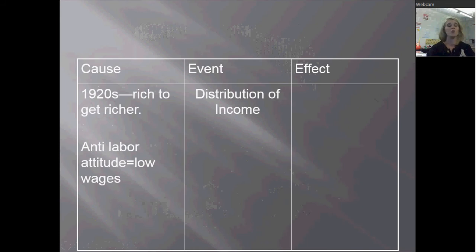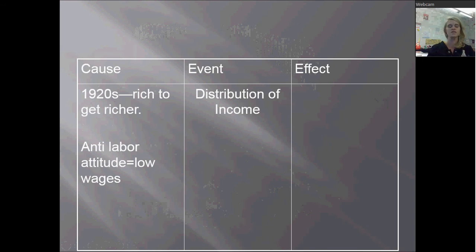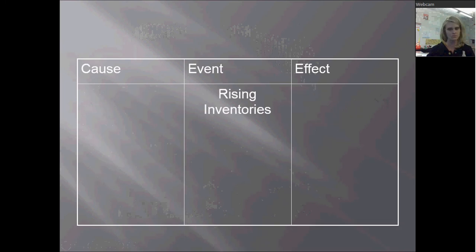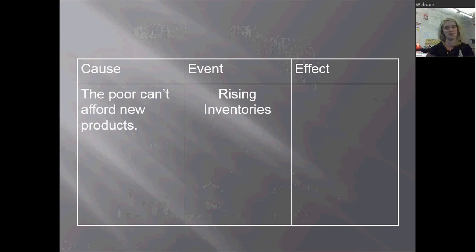There's no government regulation on business in the 1920s — think about Calvin Coolidge and Warren G. Harding, whose approach was no government regulation. That's going to lead to lower wages. So the rich are getting richer and the poor are getting poorer. The effect is the poor can't afford new products. All this new 1920s commercialism — poor people in the country are not able to buy those new things. But companies keep making them, which causes rising inventories.